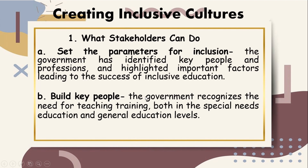Second, build key people. The government recognizes the need for teacher training, both in special needs education and general education levels. It also pushes for the use of evidence-based teaching frameworks, provision of student assistance, and access to instructional materials. Calls are made for continuing research and forming of policies by agencies such as the Department of Education to further refine the inclusive process and tailor it to the needs of children. This is an important factor that every nation has to constantly revisit, as the needs of students across continents, though similar, would have nuances depending on where they reside.